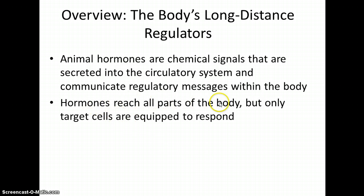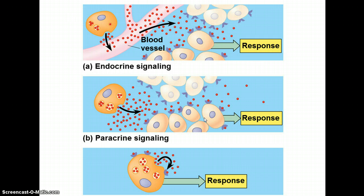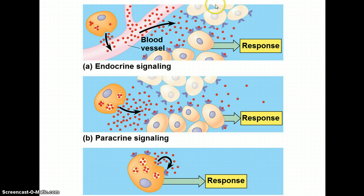These signals go throughout your body, particularly when they involve the circulatory system, but only certain cells respond. With endocrine signaling, the typical way we think about this is compounds — hormones released into the bloodstream. They then get out into the body fluids through the capillaries, and the cells that have the proper membrane proteins will receive that signal and elicit some kind of response.